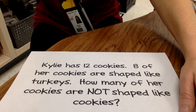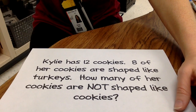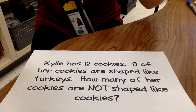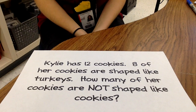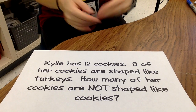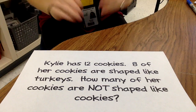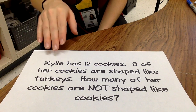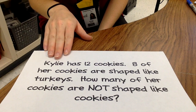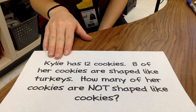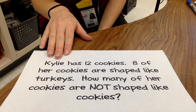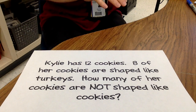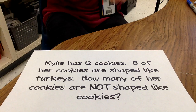I actually changed the numbers to make it easier to show on the computer because the numbers I had were a little bit too large to show in the space that I have here. But the story is: Kylie has 12 cookies. Eight of her cookies are shaped like turkeys. How many of her cookies are not shaped like turkeys?